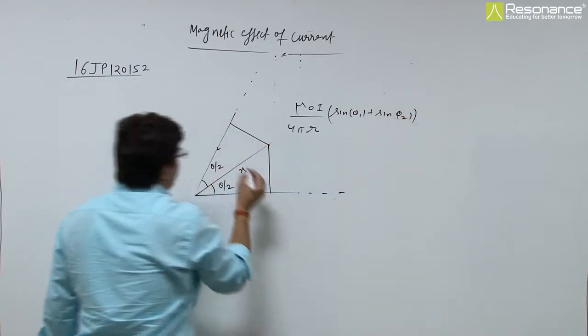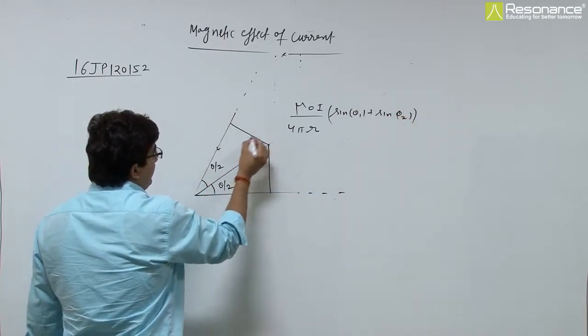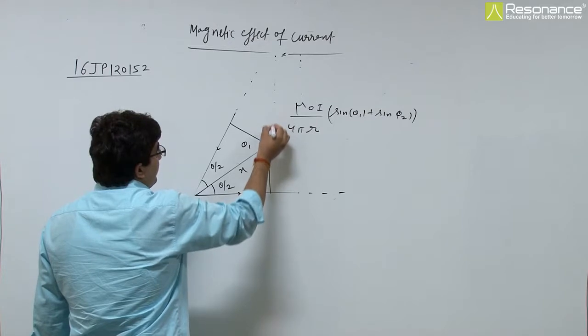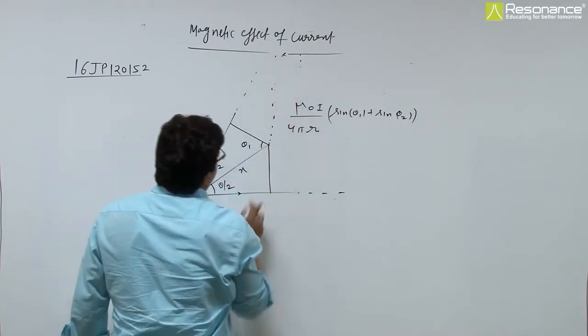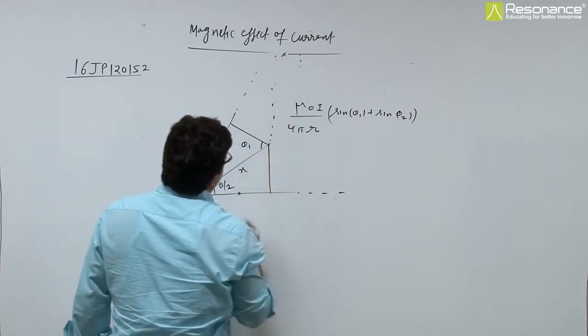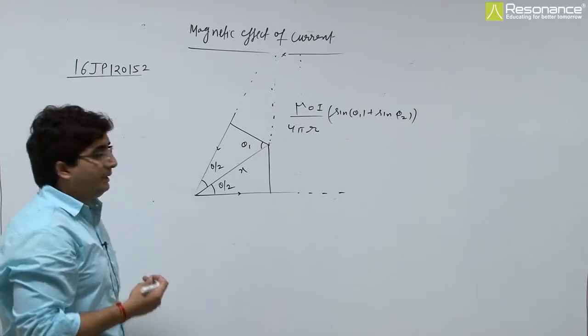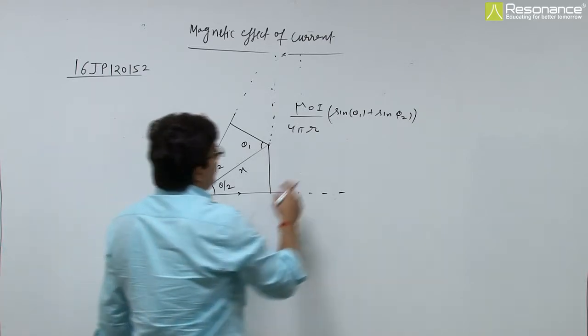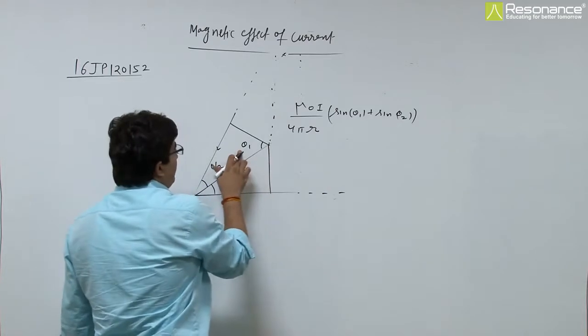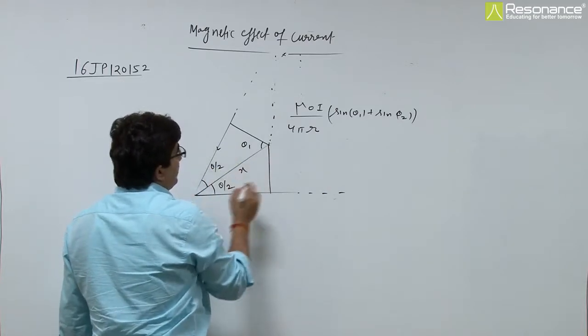Here we take theta 1 theta 2 from here, this is theta 1 and theta 2. So theta 2, we can say if it is infinite, then theta 2 is 90 degrees. So 1 is 90, and theta 1, sin theta 1, theta 1 is 90 minus theta by 2.